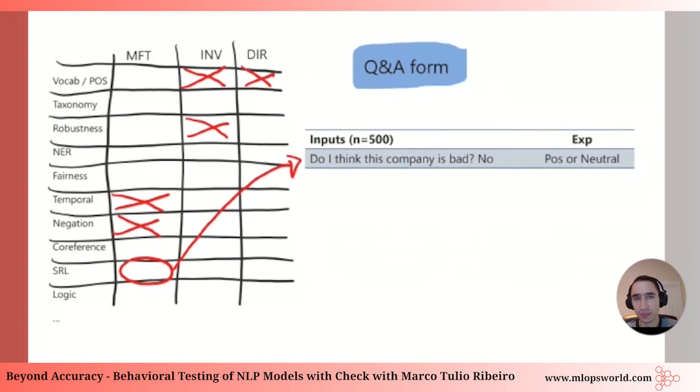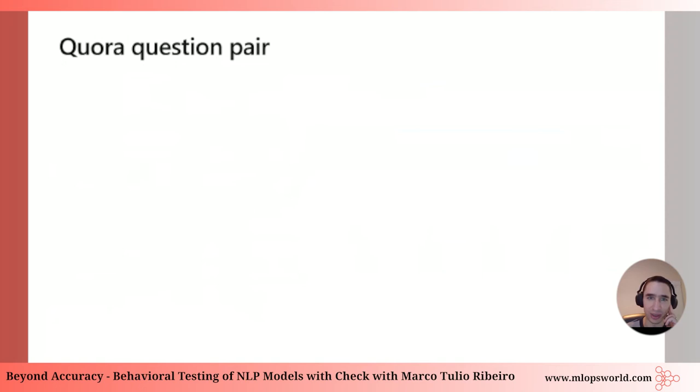We also tested semantic role labeling — different ways of framing questions like 'Do I think this is bad? No' — with failure rates close to 100%. There are many more tests in the paper; this is just a sample.